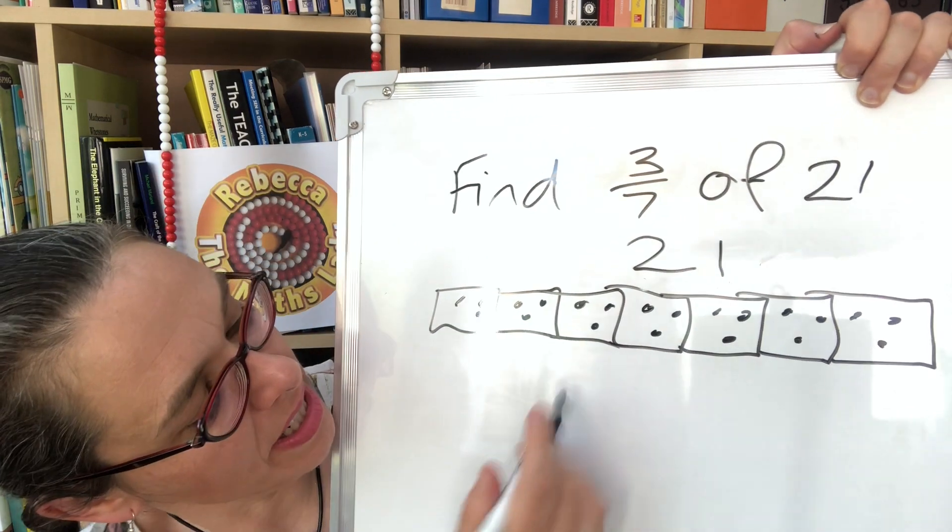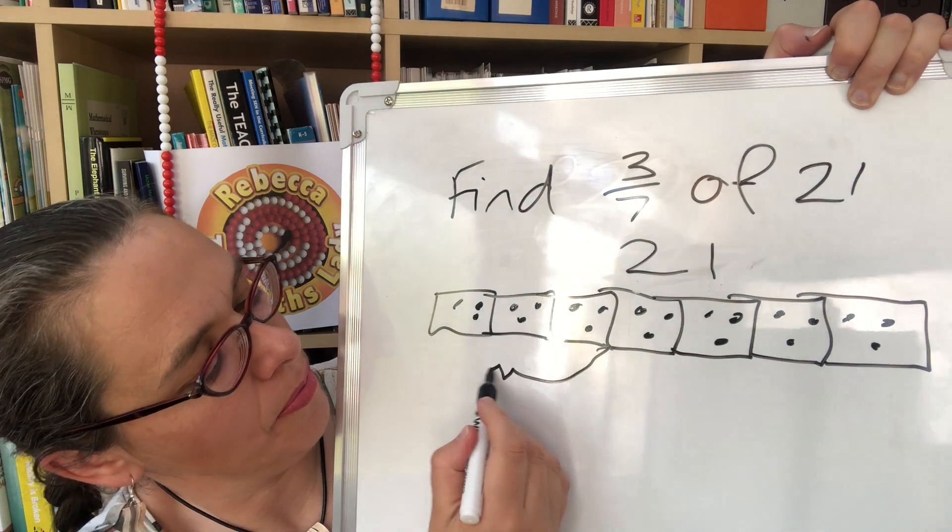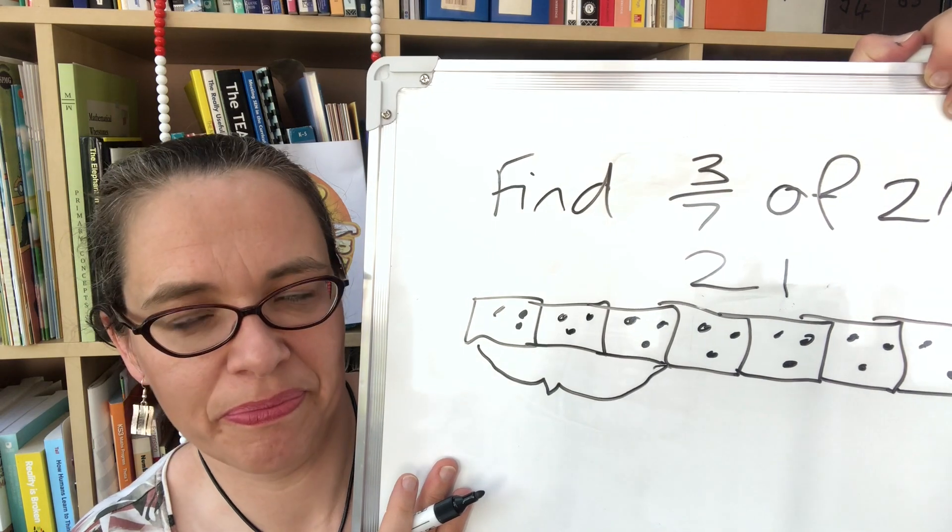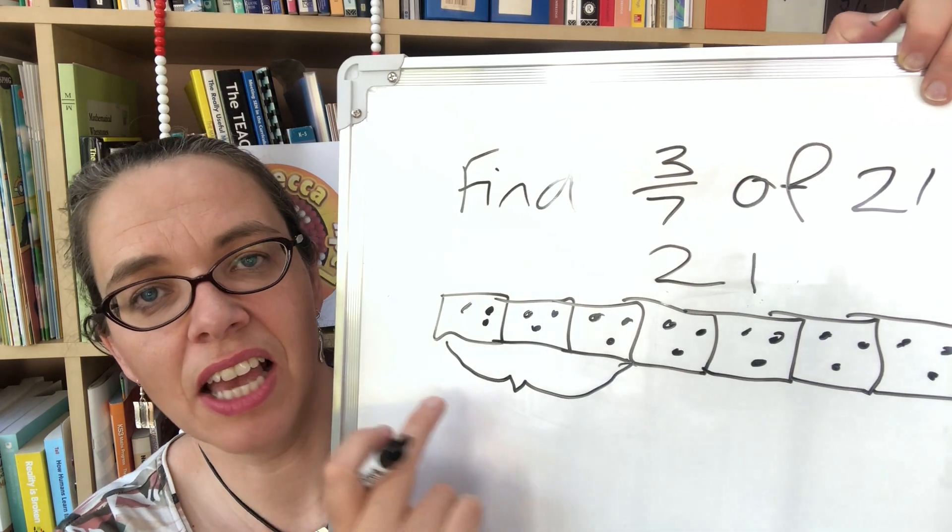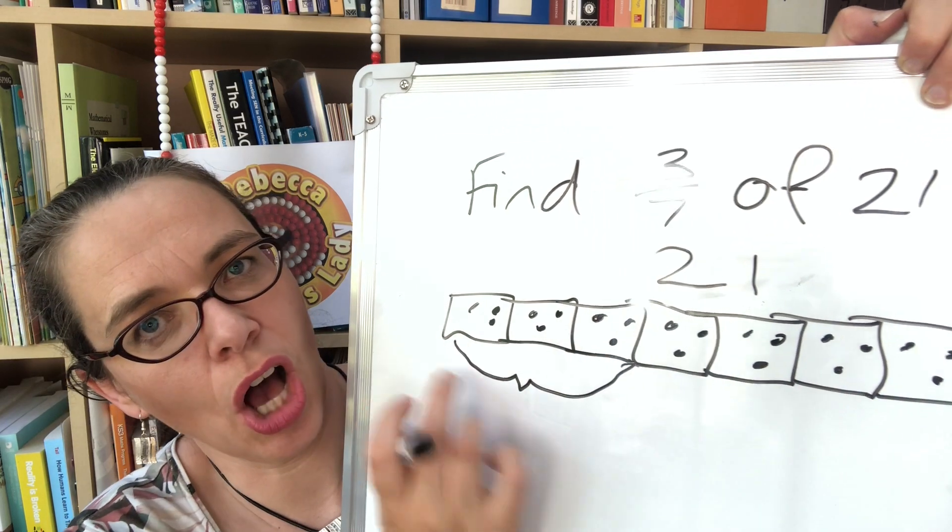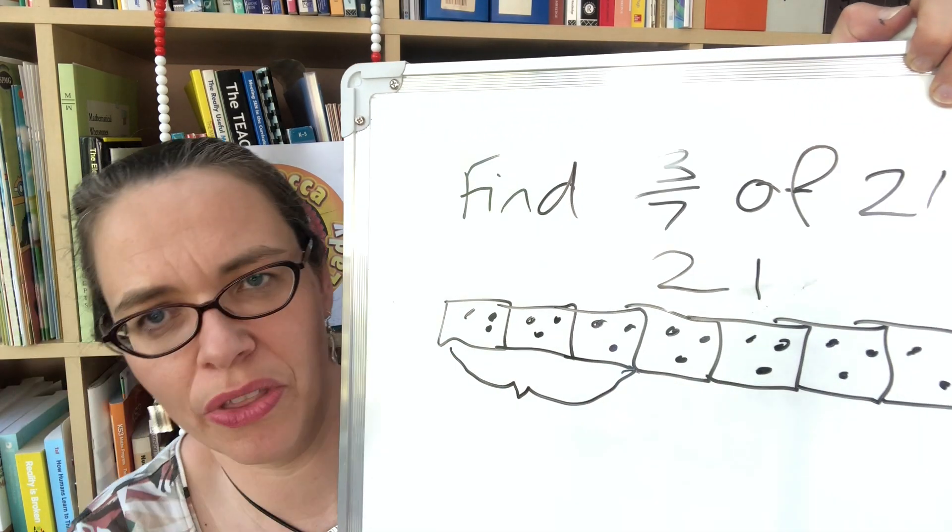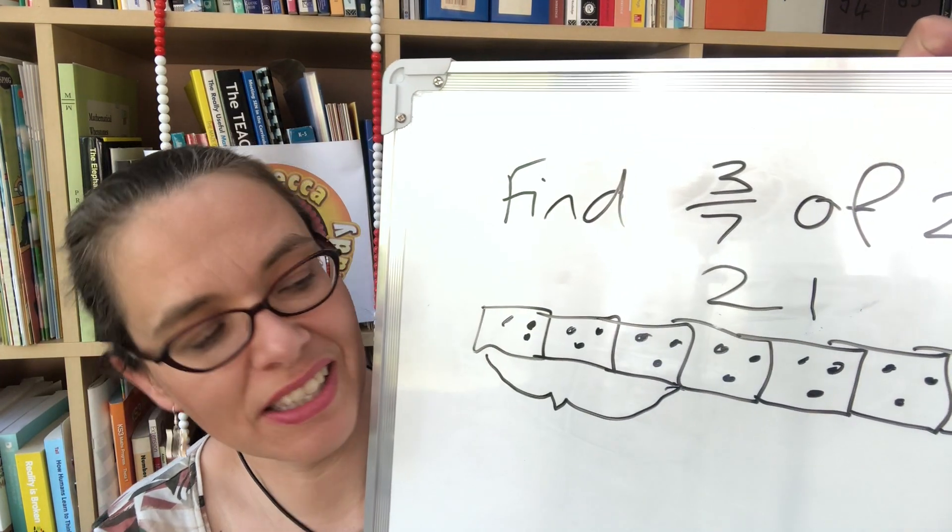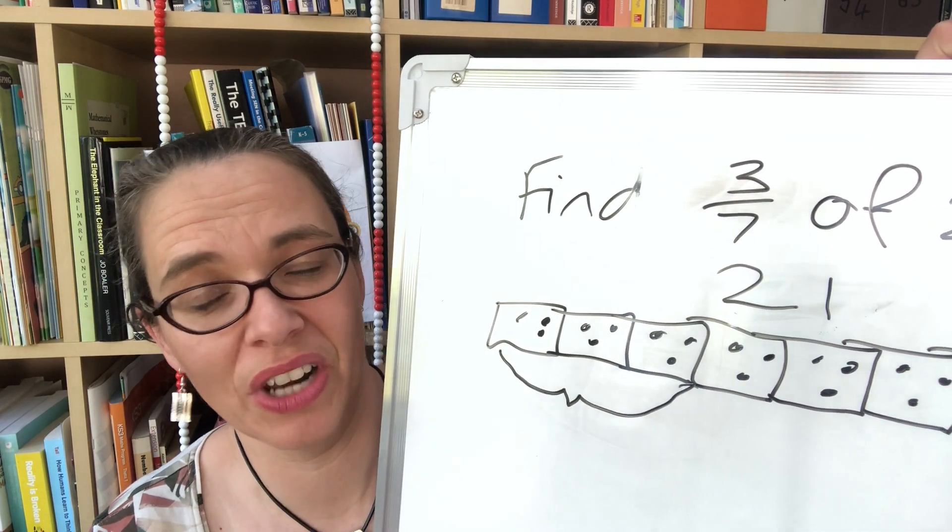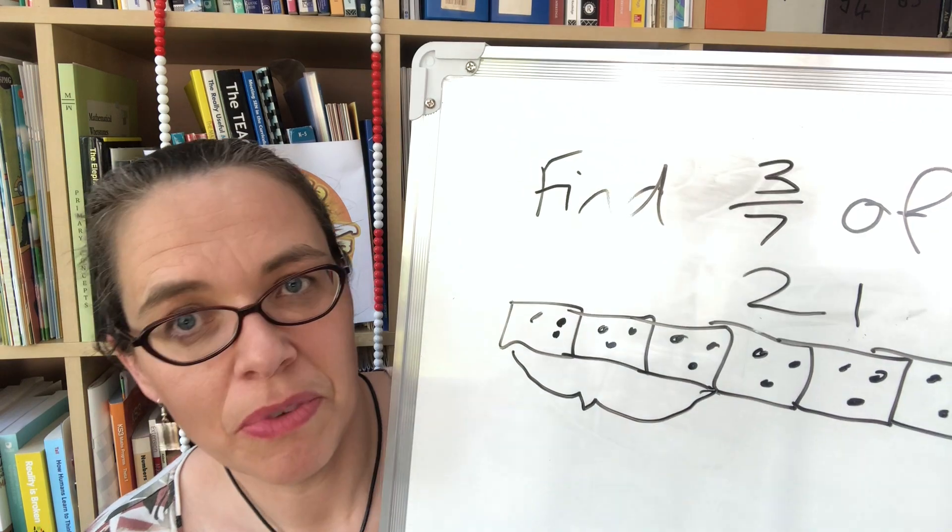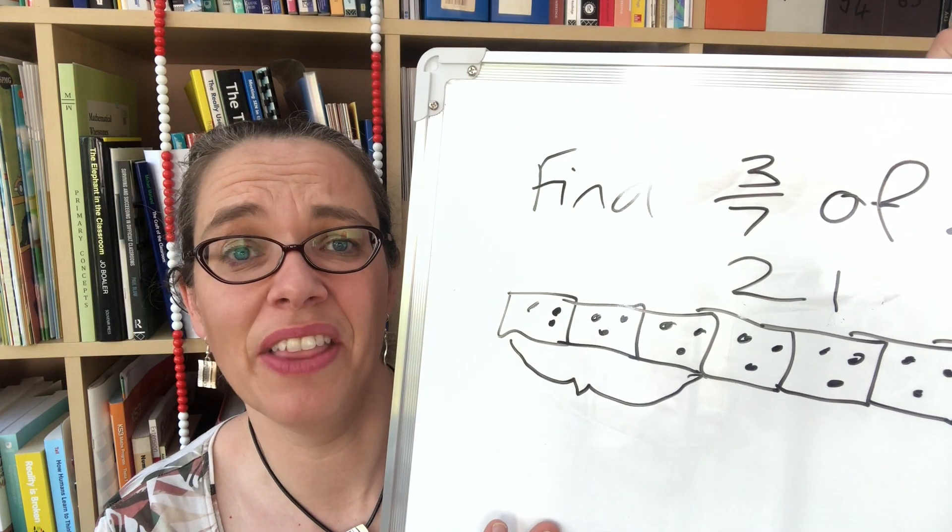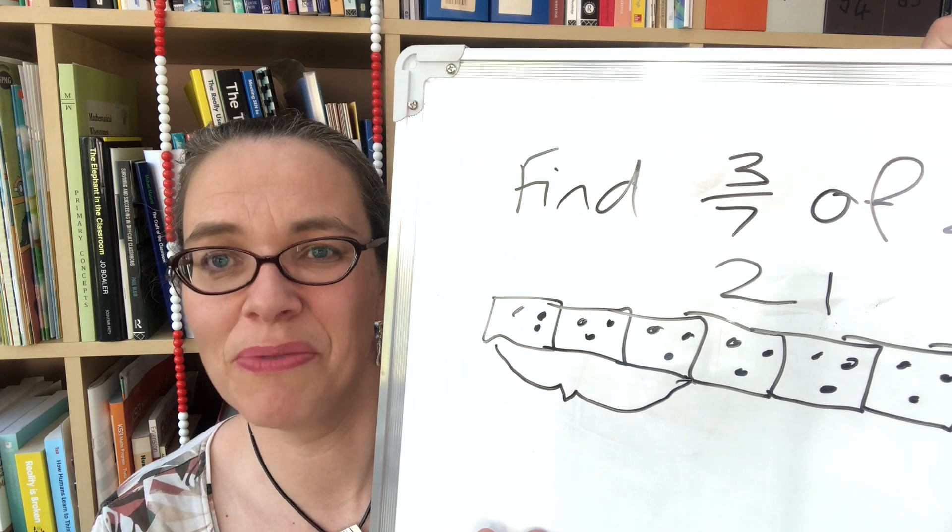And we want three sevenths, that's this much here, so we can count up that our answer is nine. You need to take a little time to establish that your child is correctly seeing the whole and understanding what the whole is here. Slightly more tricky than with the pizzas where the whole is always one whole circle and is easier to see. But for most children this works well and it's so easy to do and they can draw these diagrams for themselves.